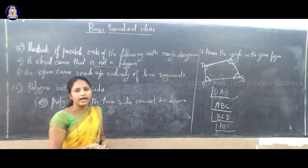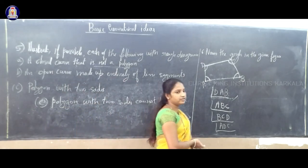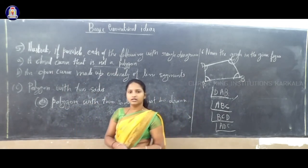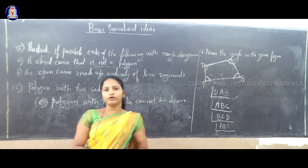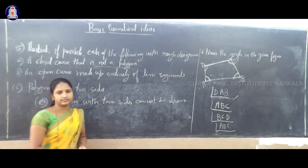So these are four angles in this given figure. How many angles are there? There are four angles. Thank you.